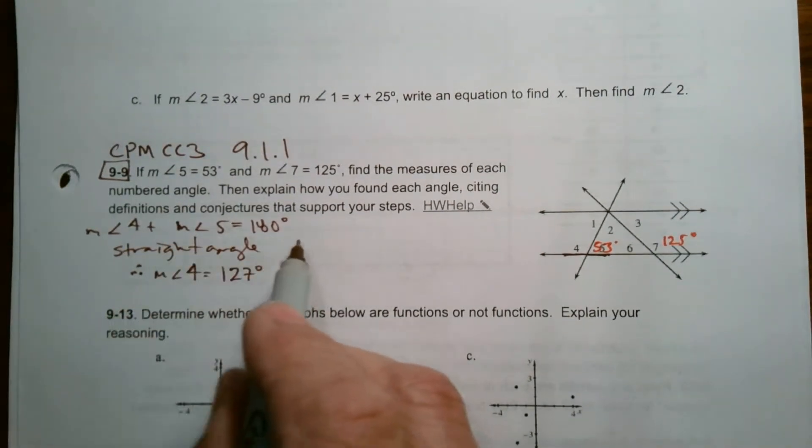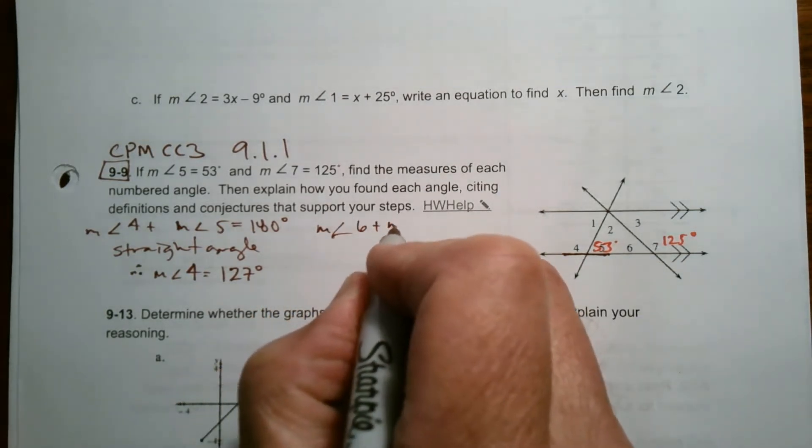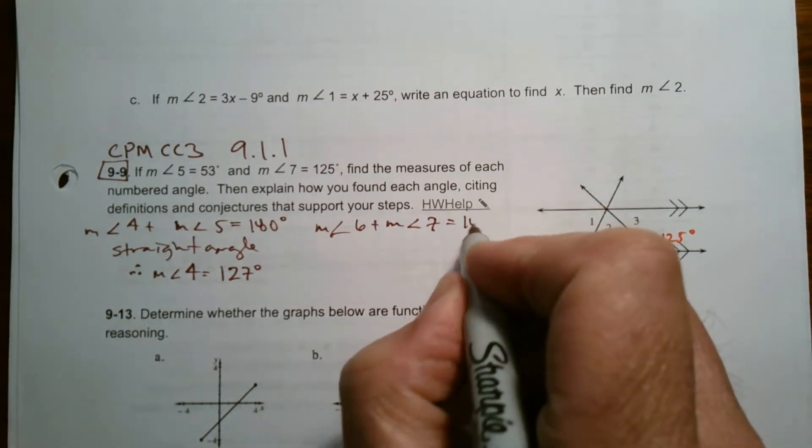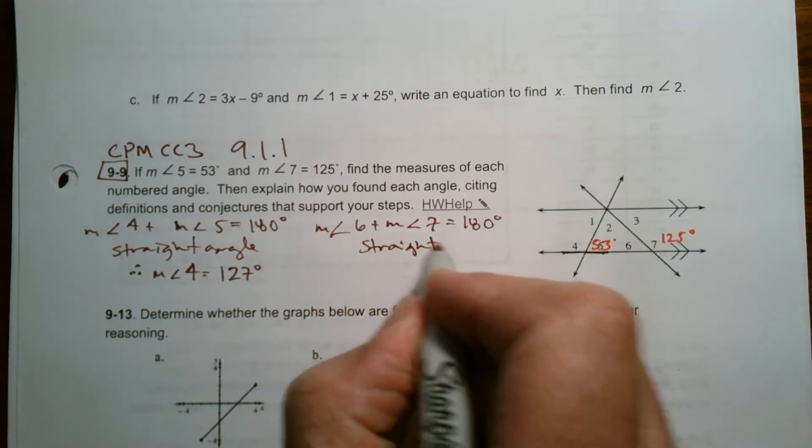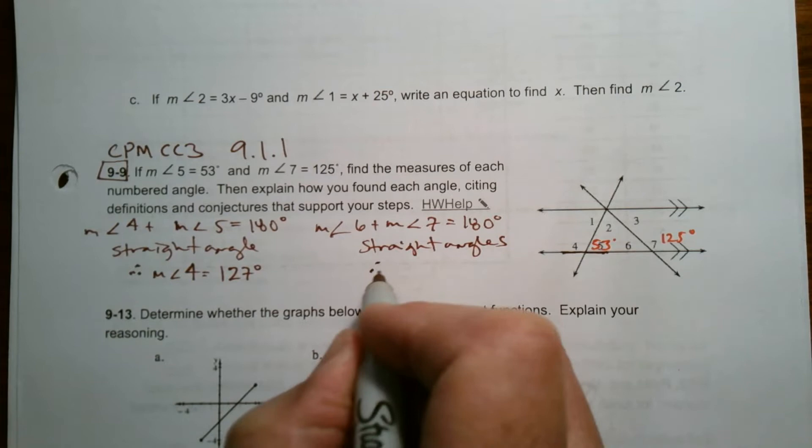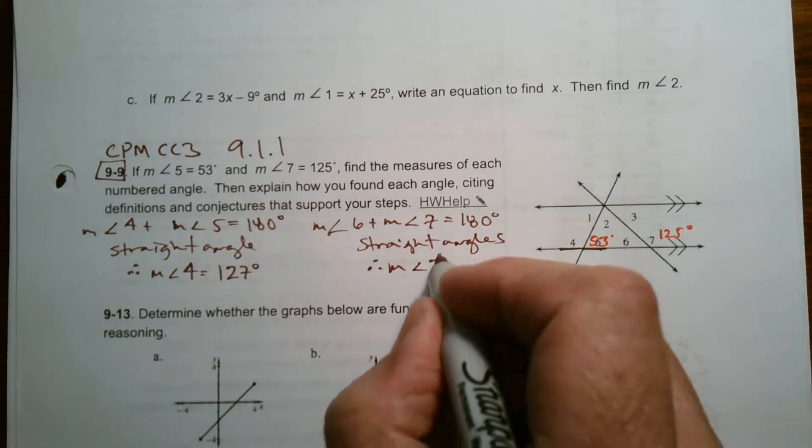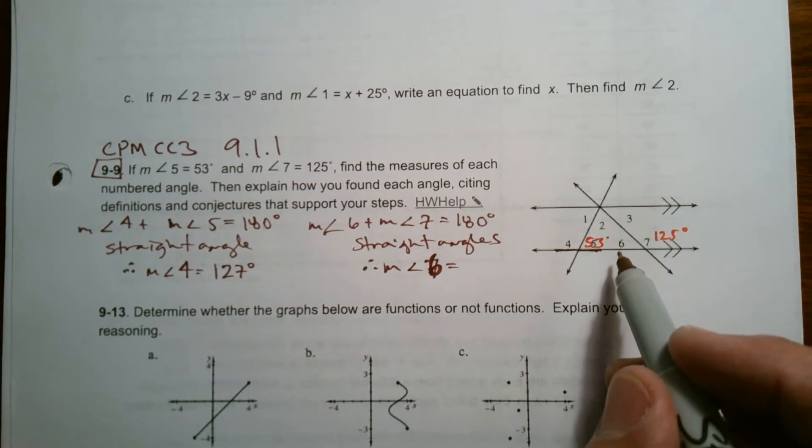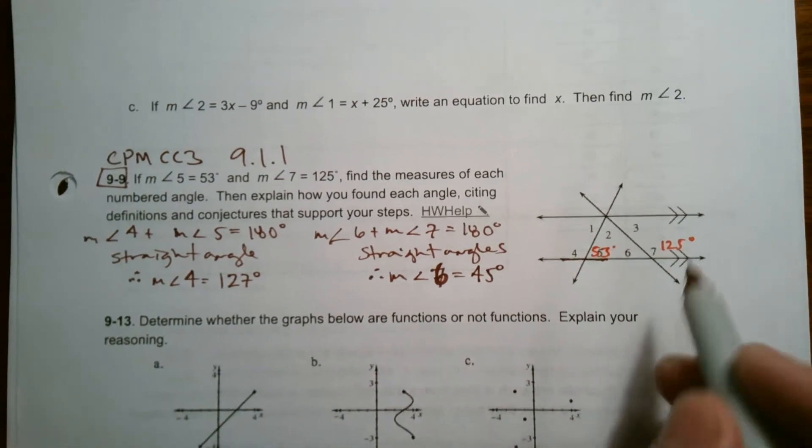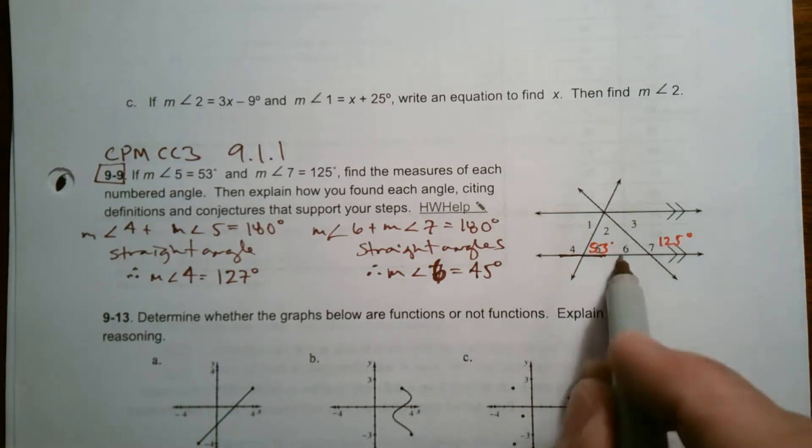And then what's also true, the same thing is true for the measure of angle 6 plus the measure of angle 7 is also equal to 180 degrees, because again, they're also straight angles. And therefore, the measure of angle 6, that's the one I need to find, is going to equal, since that's 125, measure of angle 6 would be 55. Right? Because 180 minus 125 is 55. All right, we got those two angles.